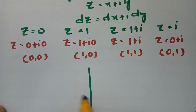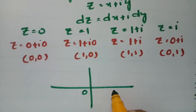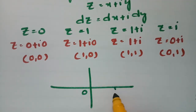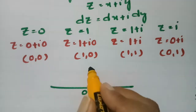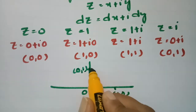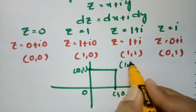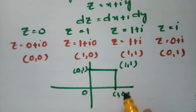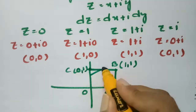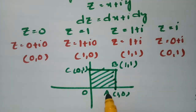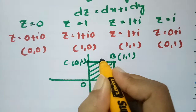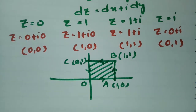If I plot these points: origin (0,0), point A at (1,0), point B at (1,1), and point C at (0,1) — this gives us the required square region. We have to find the integral along OA, AB, BC, and CO.